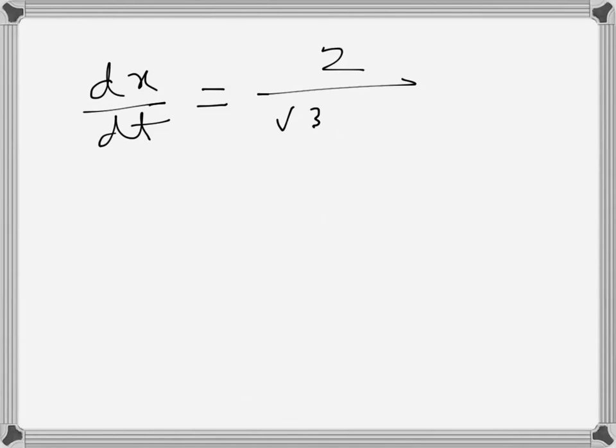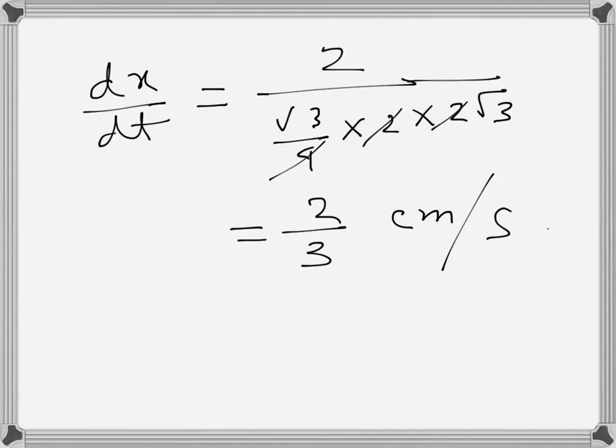dx/dt equals 2 over √3/4 times 2 times 2√3. That's 2 over √3 times 4, so this is 2/3 centimeters per second. This is the rate at which the side will be increasing.